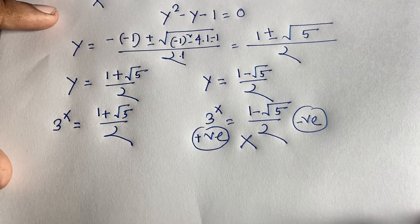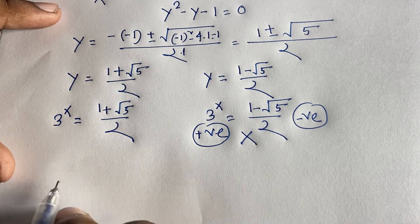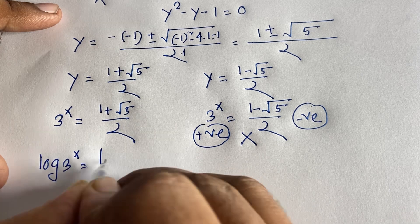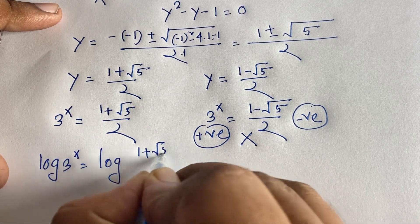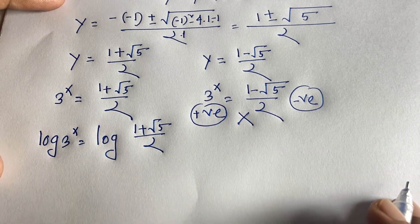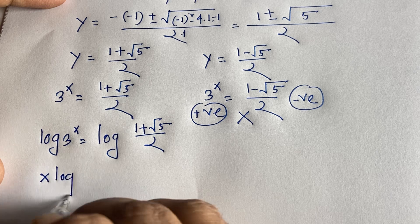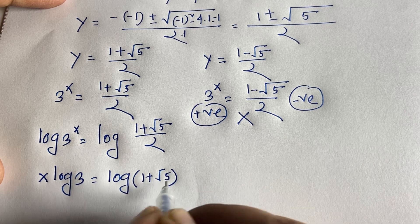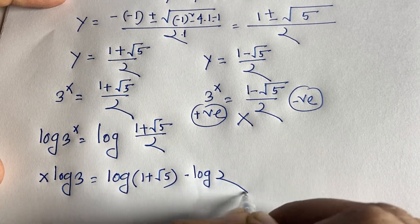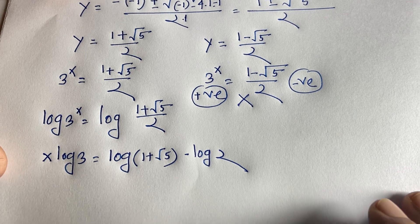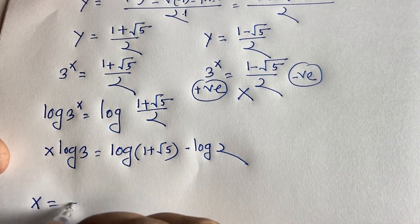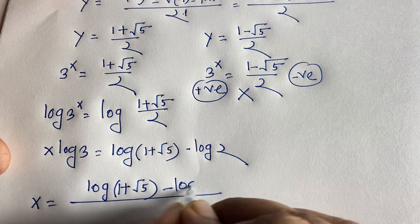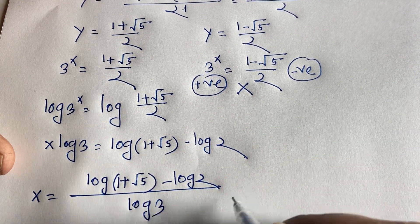For the valid solution, 3 to the power x equals (1 plus square root of 5) over 2. Applying log to both sides: log(3 to the power x) equals log((1 plus square root of 5) over 2). By logarithm rules, x moves to the front: x times log 3 equals log(1 plus square root of 5) minus log 2. Dividing both sides by log 3, we get: x equals (log(1 plus square root of 5) minus log 2) over log 3.